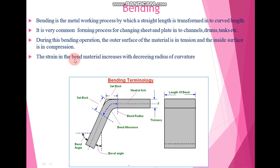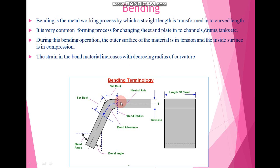The strain in the bent material increases with decreasing the radius of curvature. So the strain in the bent material increases with decreasing this radius of curvature. That is what about bending.